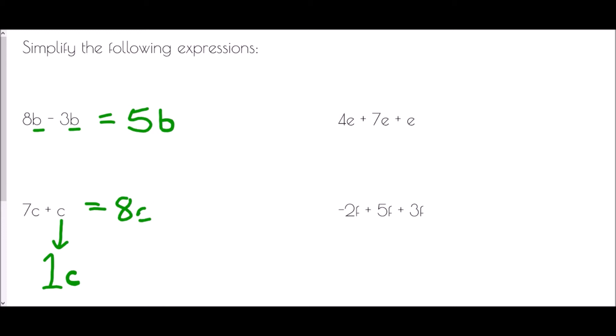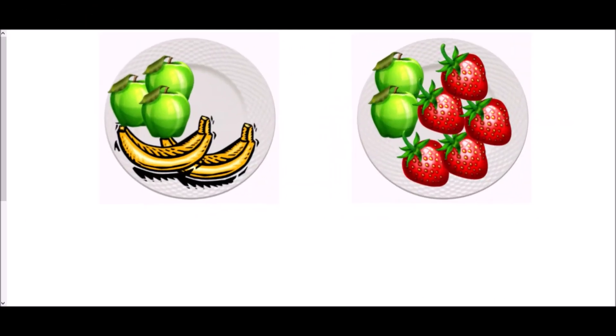4E plus 7E plus E - they're all E's, so it's fine to add them together. 4E plus 7E is 11E, then plus another E - that's like 1E - giving 12E in total. And then finally, negative 2F plus 5F plus 3F. Starting at negative 2 and adding on 5 gives positive 3, then adding another 3 gives positive 6, so we have positive 6F.